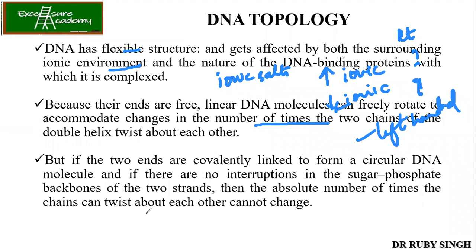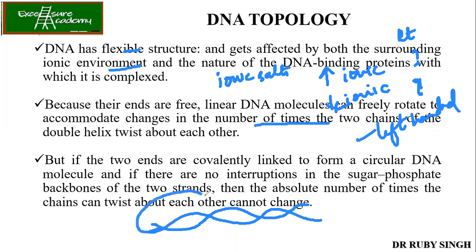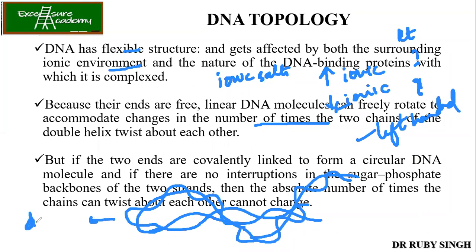What does this mean? You have your DNA, and since the ends are free, you can twist this particular region more. It can come over and go on like this. It's like your DNA is already helical — take that double-stranded helical strand and twist it again. So what is happening? It's like being helical, and then one more helix is present on top.